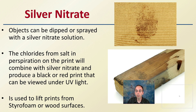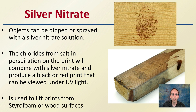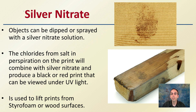Silver nitrate is the last method covered here. Objects can be dipped or sprayed with a silver nitrate solution. The chlorides from the salt and perspiration on the print will combine with the silver nitrate to produce a black, reddish print that can be visible under UV light. It's used to lift prints from styrofoam and wood surfaces, but be careful because it does stain and is not the easiest material to work with — though for identifying prints, it has a great purpose.